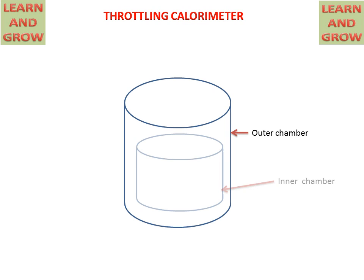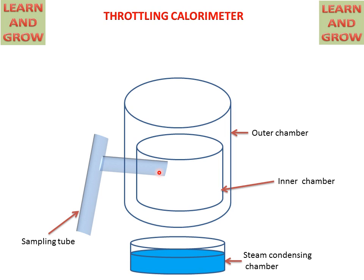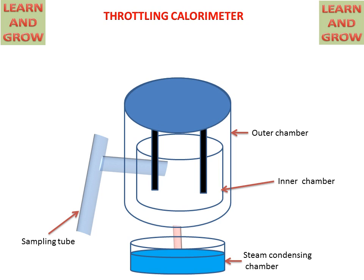We have an outer chamber and an inner chamber with connecting pipe. This is the sampling tube for transferring steam to the inner chamber. This is the steam condensing chamber in which steam will be condensed. This is connected to the outer chamber. And these are the baffles or restriction for the steam.